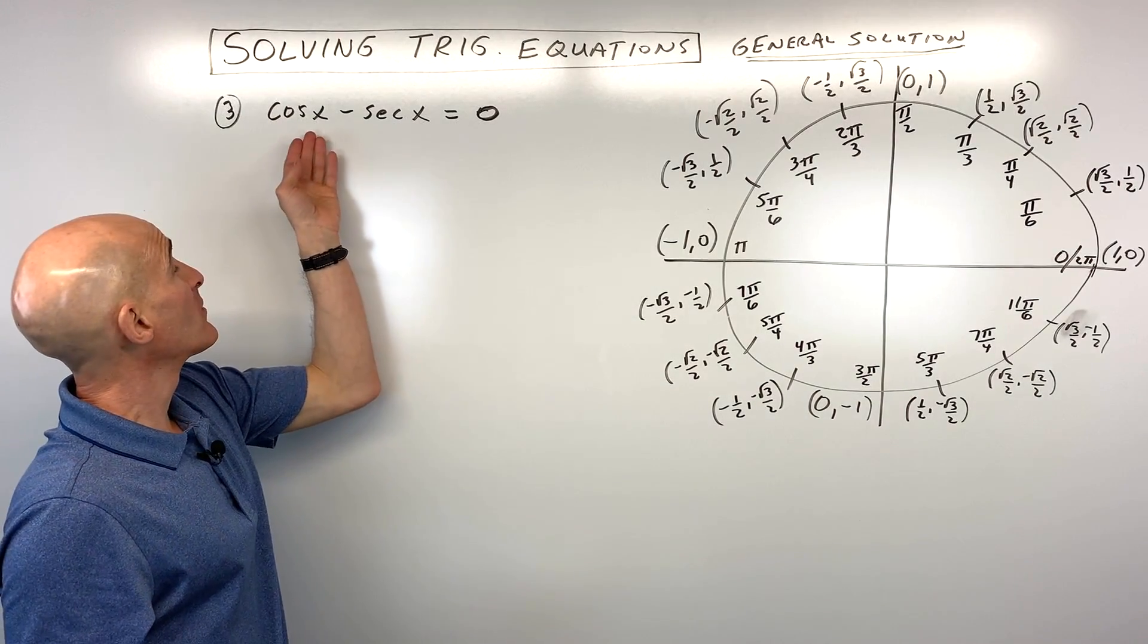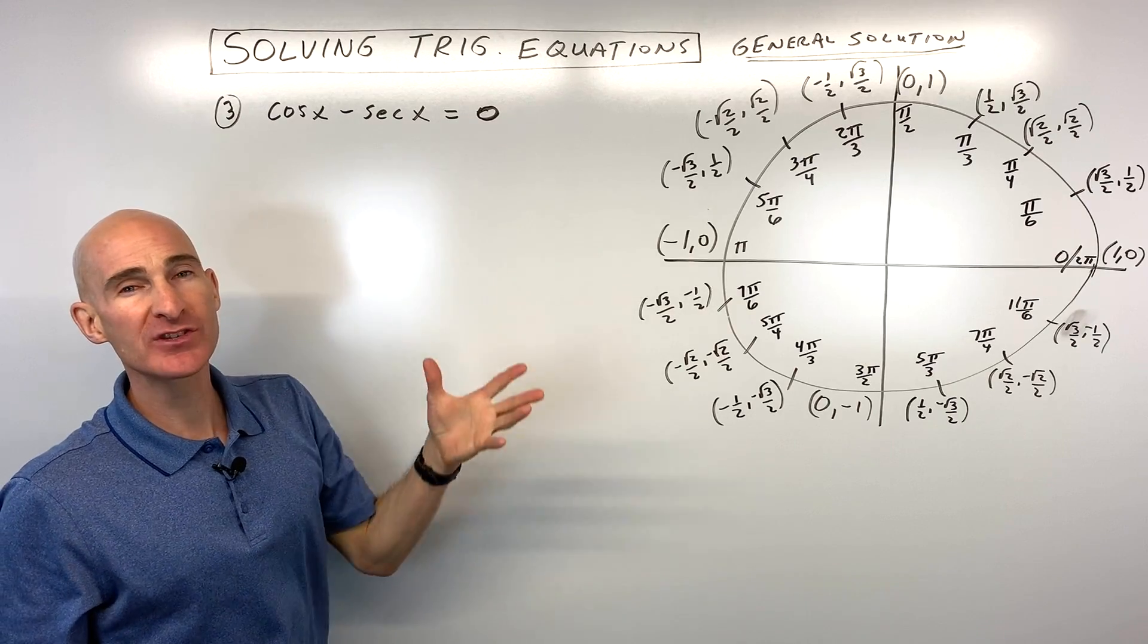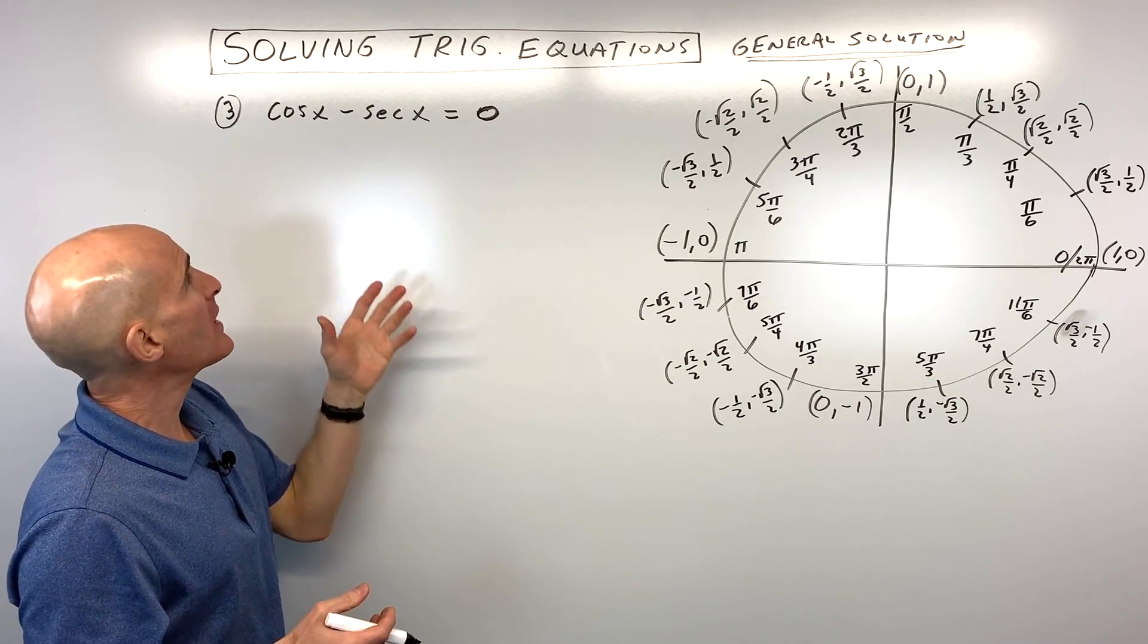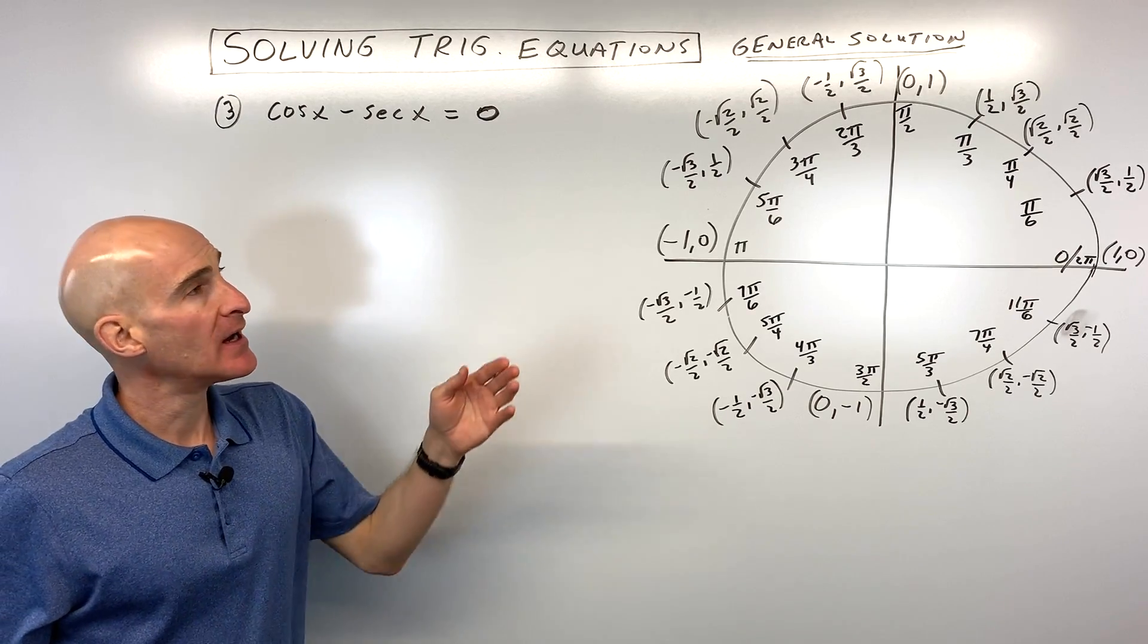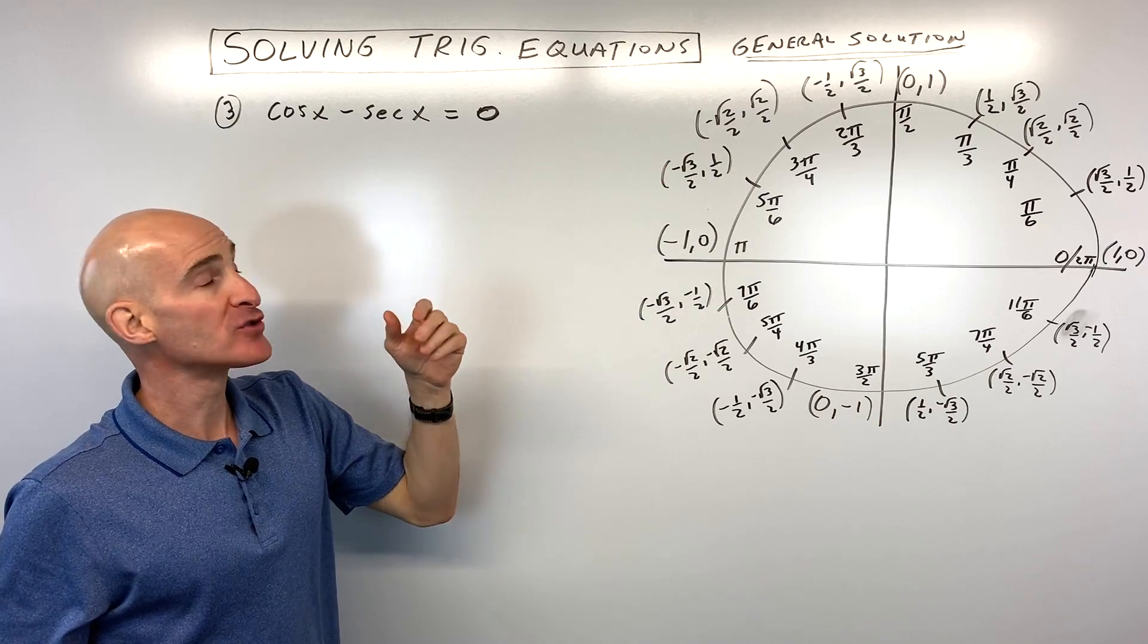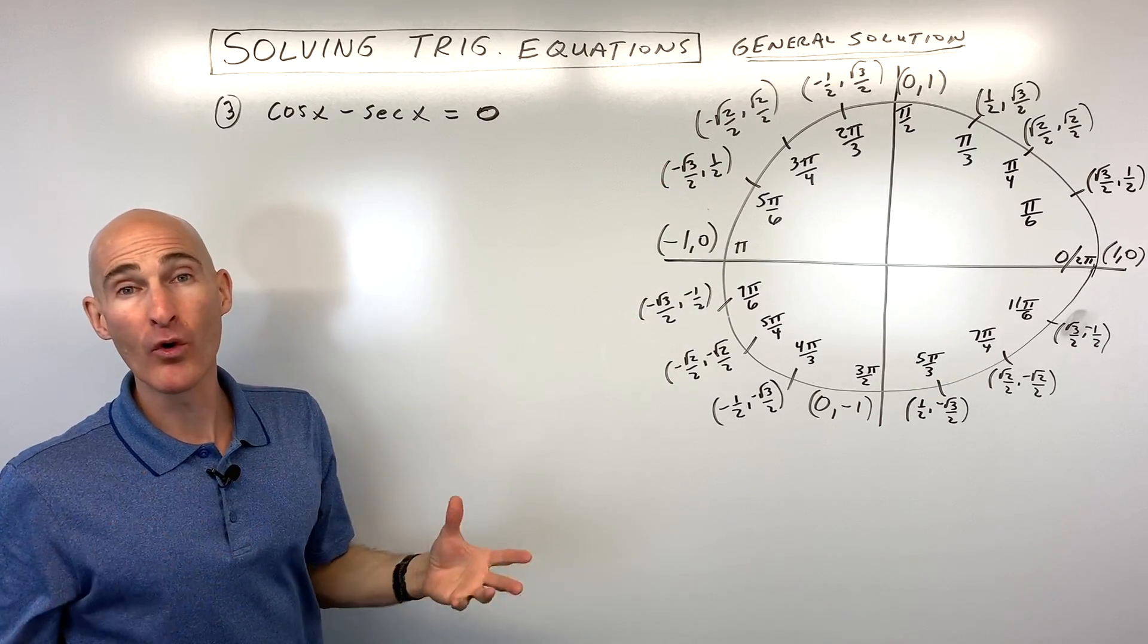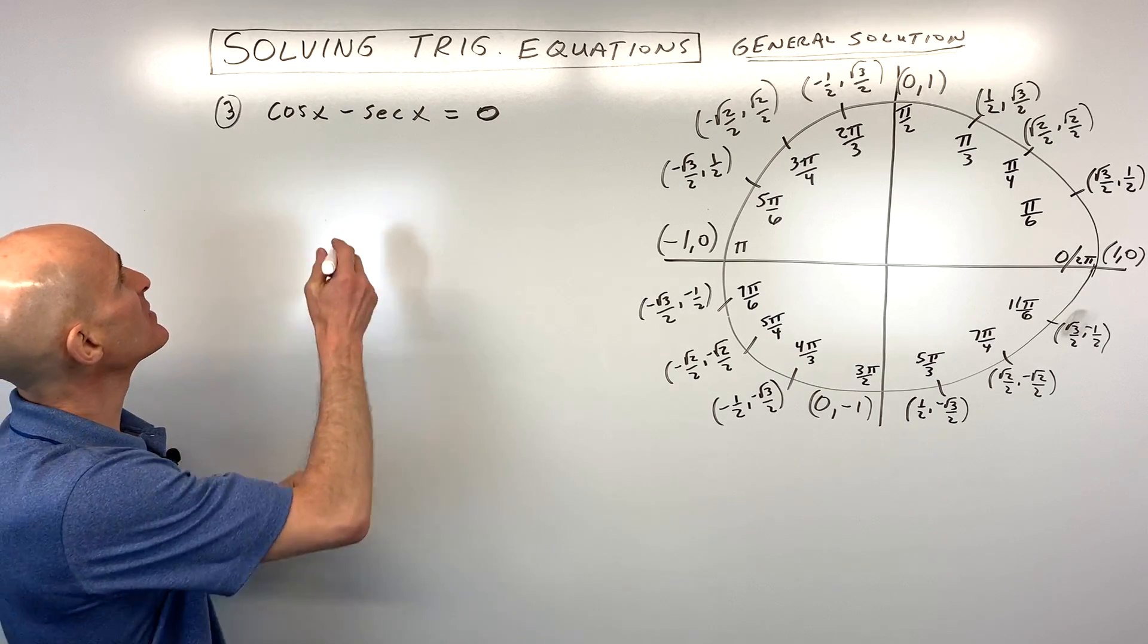Okay, number three, we have a little bit more challenging one. We have cosine x minus secant of x equals 0. How do we solve that one? And by the way, if you like the way that I'm explaining these concepts, and you want to go deeper into Algebra 2, definitely check out my Algebra 2 video course for sale. It goes into all these different concepts plus more covering Algebra 2 topics. But let's jump into this one.